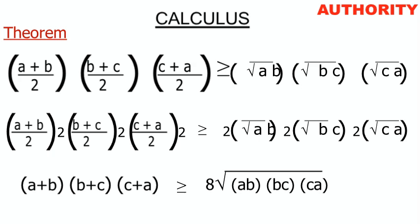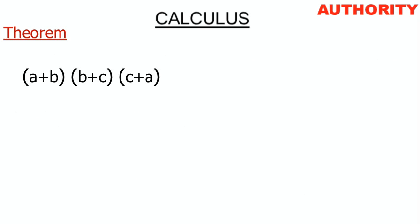Since we have √(ab), √(bc), and √(ca), all of them have square roots, so we can combine them under one square root sign. We get a long square root containing ab · bc · ca, meaning all factors are under a single square root.